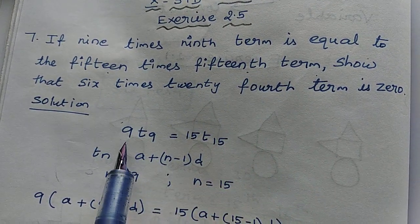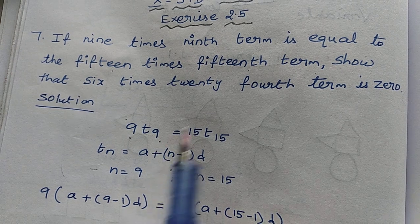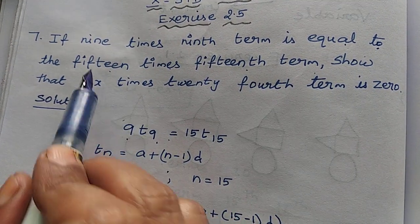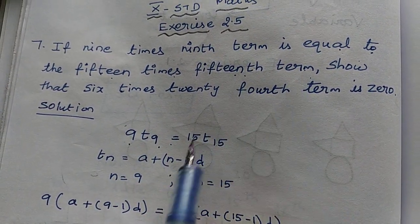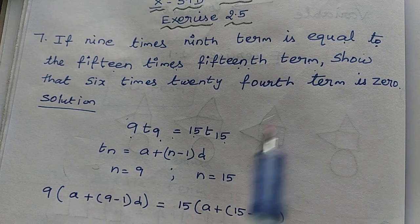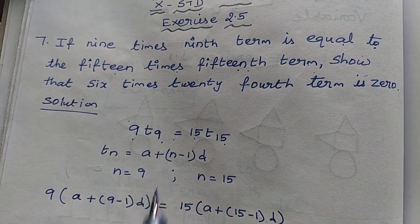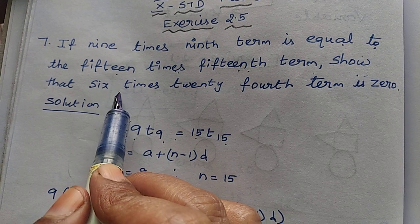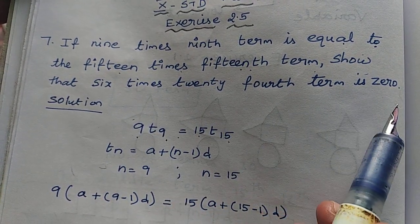9 times 9th term, 9 times 9th term, first of all write. Equal to 15 times 15th term, 15 times 15th term, show that 6 times 24th term is 0.